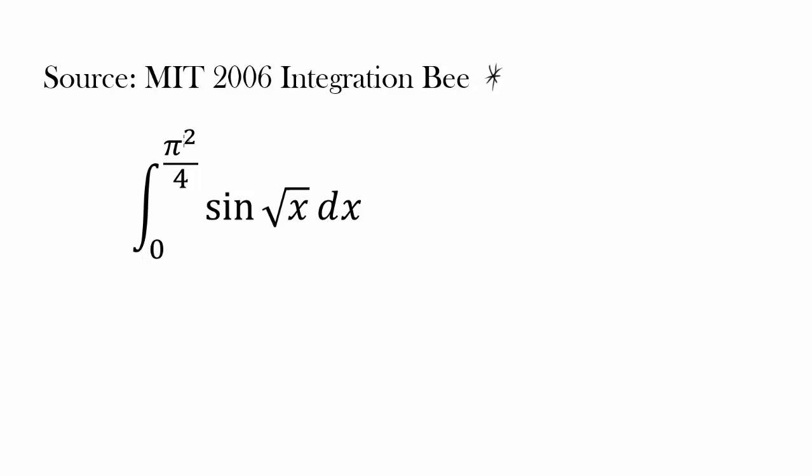Integral from 0 to pi squared over 4 of sine of square root of x dx. And pi squared over 4 looks very intriguing because that's pi over 2 squared. So maybe we want to make a substitution involving square root or squares to get this integral.